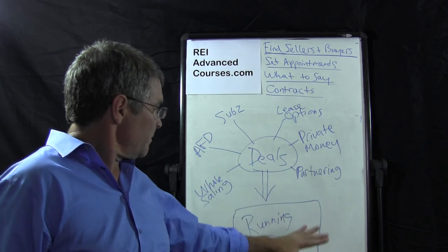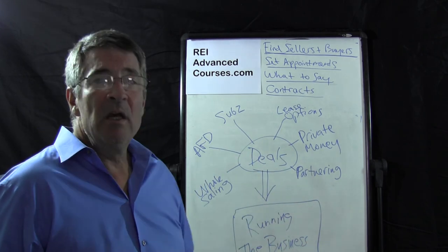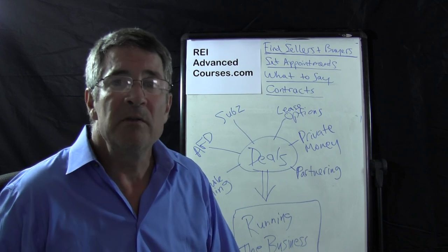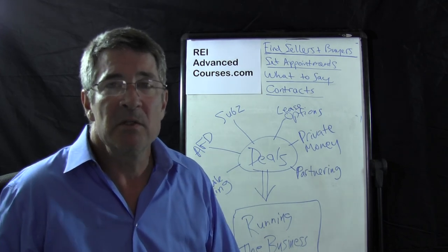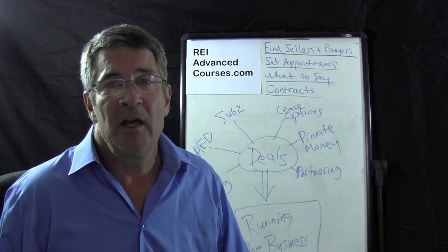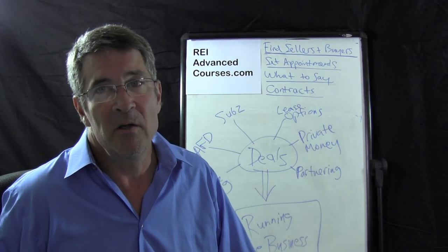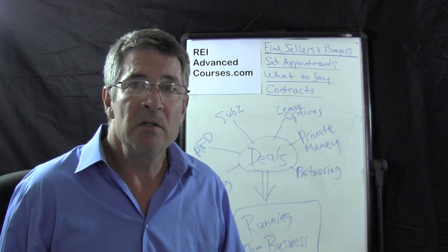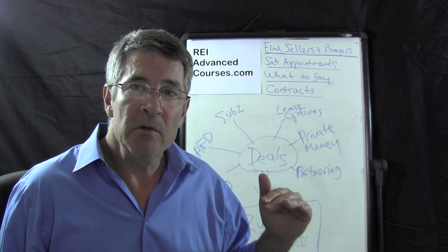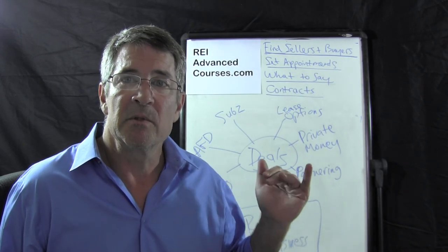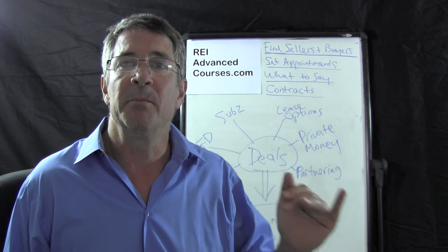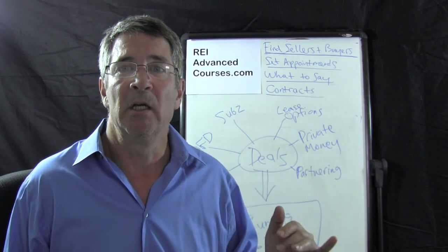At the bottom of this, it says running the business. You've got to be able to run the business. If you can't run the business, all you've got is a hobby — all you've got is information. We give you the baby steps, the action steps to be able to make money.